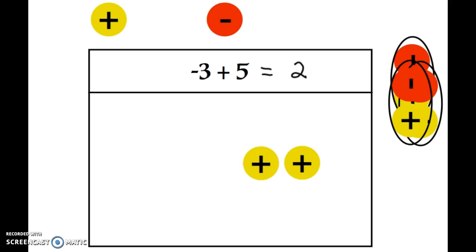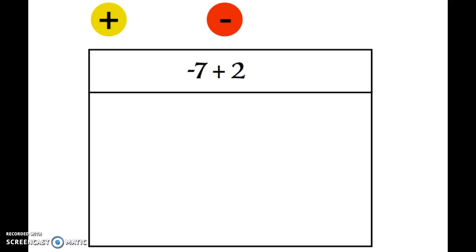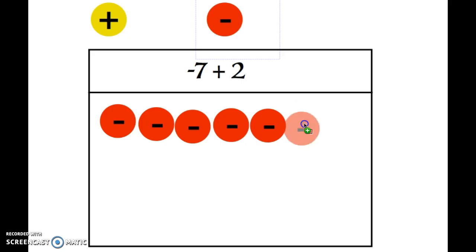All right, let's look at another one. If you're feeling pretty comfortable, you might want to try this one on your own. It's negative 7 plus 2. So go ahead, if you think you're ready for it, pause the video, try this and see if you agree. So to represent negative 7, I'm going to put 7 red chips on the board, might be a little bit of a tight squeeze getting those on, and then I need two yellows.